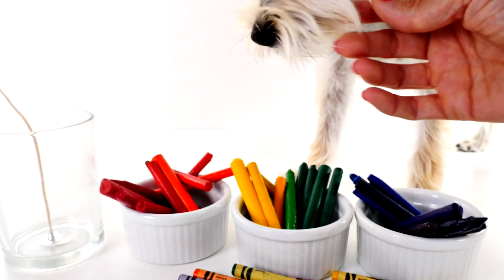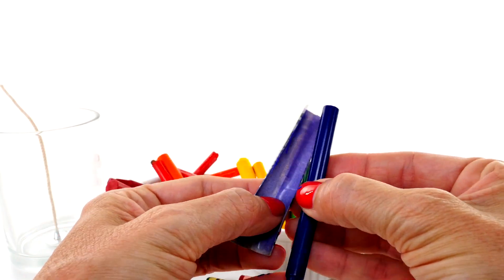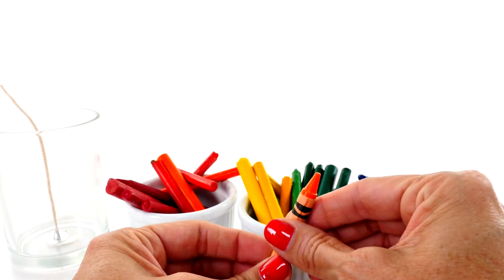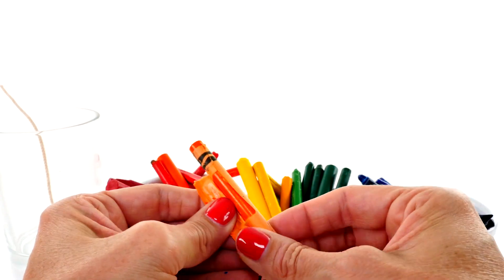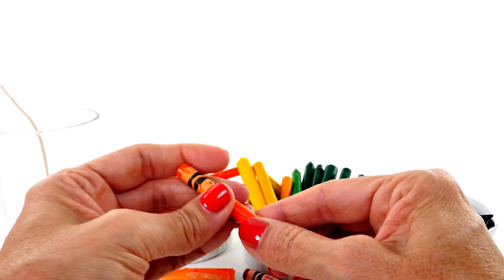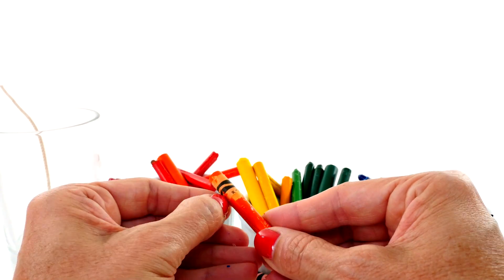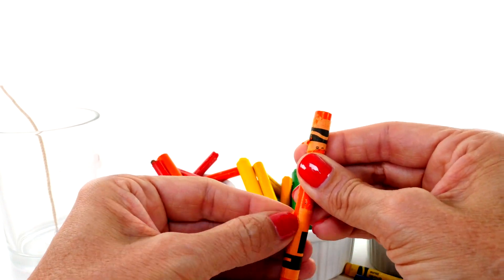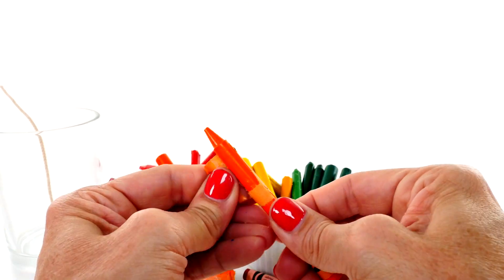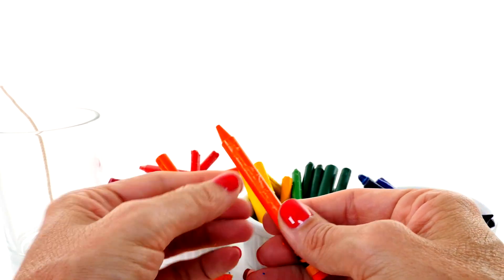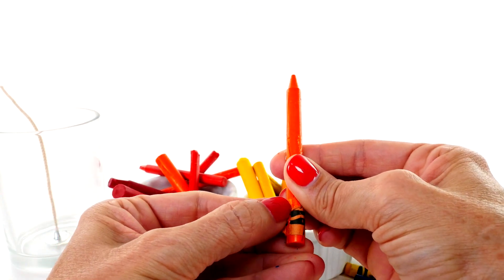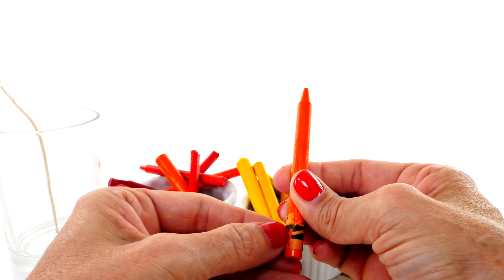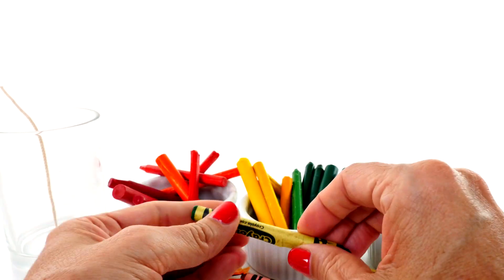Silly girl. So if you want to do this, the first thing you'll need to do is remove the wrapper. What I did is I cut a slit right down the middle of the paper to make it easier to remove because it's kind of tough. I thought we would make a rainbow candle.